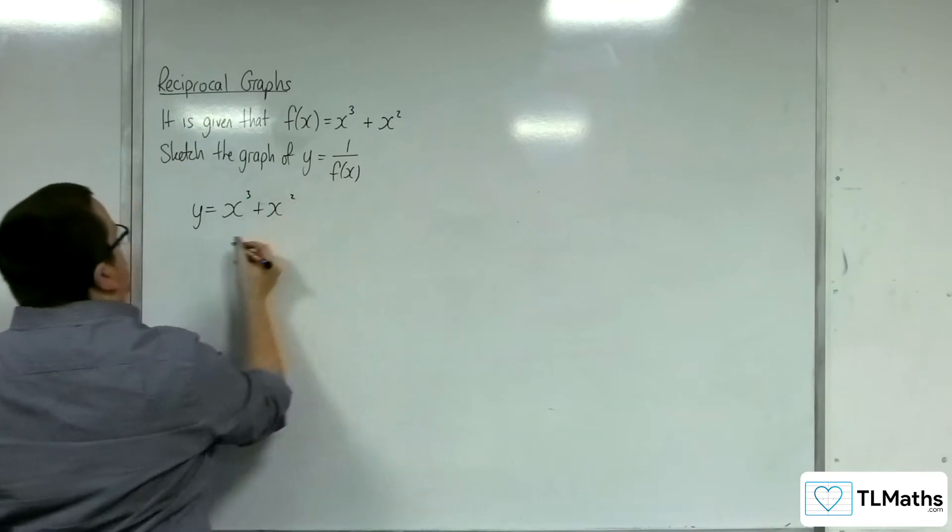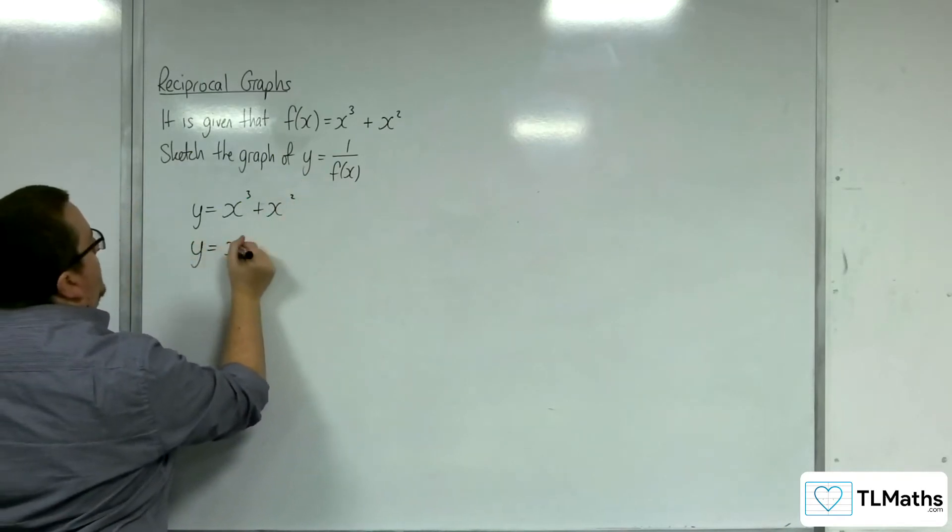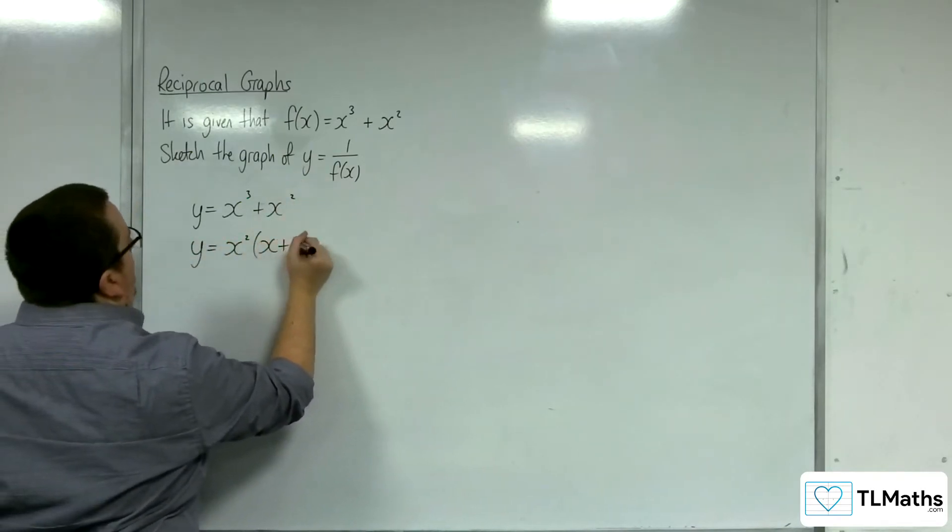So the first thing you want to do is factorise that. So let's factor the x squared out, and we're going to get x plus 1.